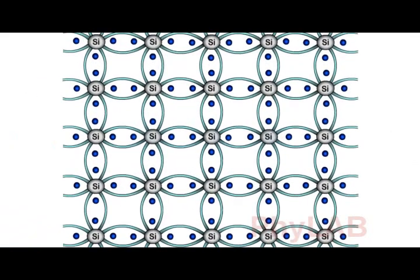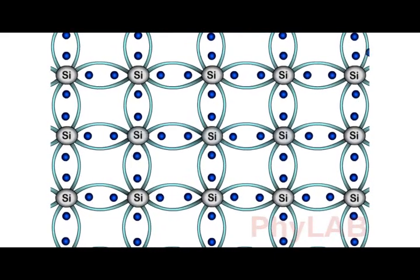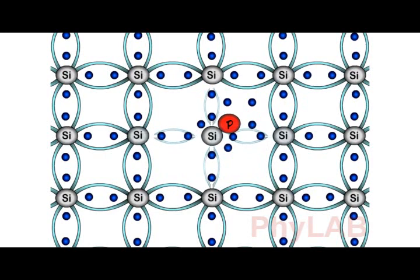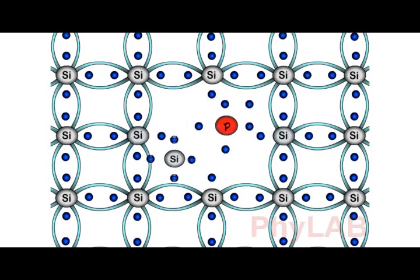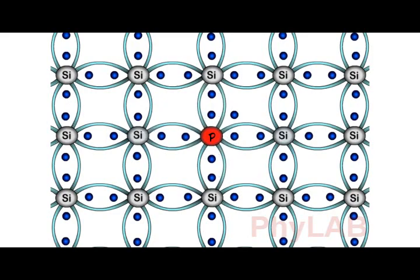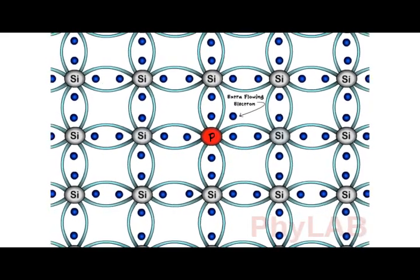When we add pentavalent impurities to an intrinsic semiconductor, we observe that the phosphorus atom forms four bonds with four silicon atoms, fulfilling the needs of silicon. But even after that, there remains one electron which does not form any bond and remains free.